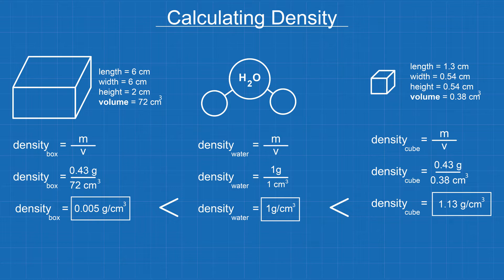So if we calculate the densities of our box and cube, we get this. The object with the lower density floats, and the one with the higher density sinks.